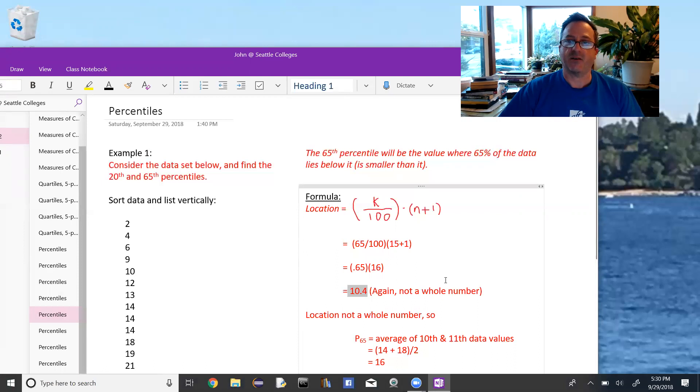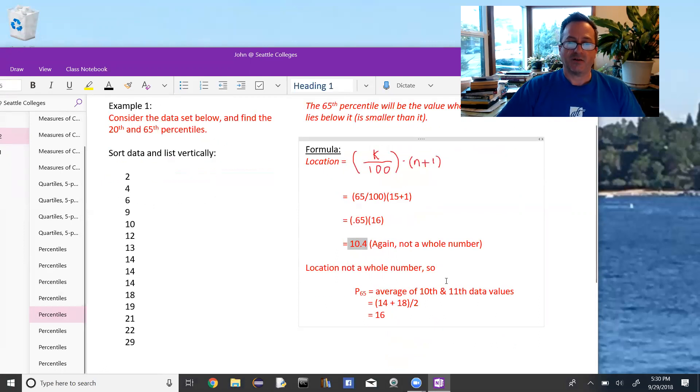Again, that's not a whole number. So we take, if it was a whole number, it's 10, so countdown 1, 2, 3, 4, 5, 6, 7, 8, 9. The 10th data element is 14. The 11th one is 18.